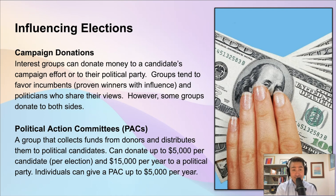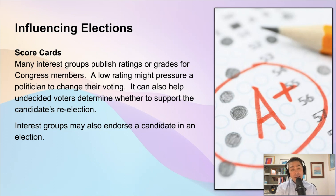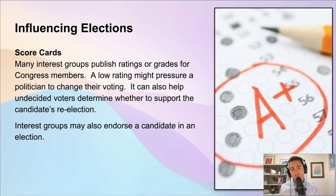Money can make a big difference in whether somebody gets elected, but there are other ways interest groups play an impact in elections as well. One of those is doing scorecards of politicians. A lot of interest groups publish ratings or grades for members of Congress or other politicians — saying this politician is getting an A-plus, or this politician is doing a lousy job and getting an F. A low rating could put pressure on a member, making them think twice about how they'll vote next time because they might want a higher grade.